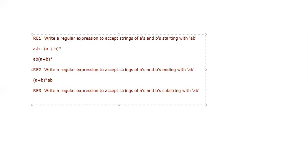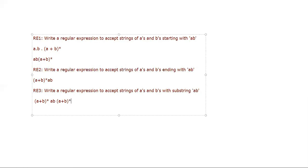The third problem: write a regular expression to accept strings of a's and b's with substring 'ab'. Since 'ab' must appear somewhere in the middle, we can have any occurrences before and after. So we write (A + B)* · A · B · (A + B)*. Similarly, we can work with symbols 0, 1 or others. Writing regular expressions is easy once you understand plus, dot, and star properly. Keep watching — we'll solve more problems on regular expressions in the next sessions. Thank you for watching, subscribe to the channel and click the bell button.